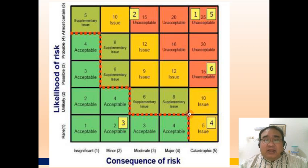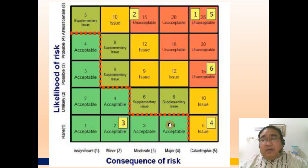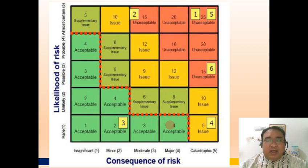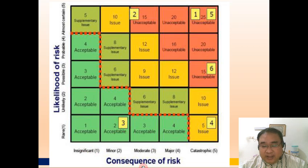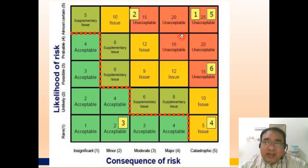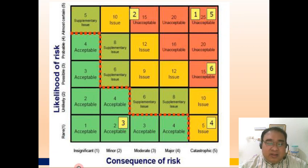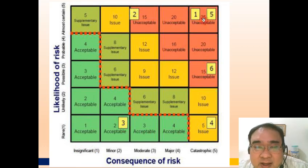Langkah terakhir dalam manajemen resiko adalah menyusun apa yang disebut dengan risk register atau daftar resiko yang kita masukkan dalam bentuk matriks. Matriks ini ada yang warnanya merah atau orange, ada yang warnanya kuning, ada yang warnanya hijau. Sumbu X menggambarkan severity atau konsekuensi, sedangkan sumbu Y menggambarkan probability. Resiko yang paling tinggi adalah yang berwarna merah karena memiliki probabilitas yang besar dan tingkat severity yang besar.